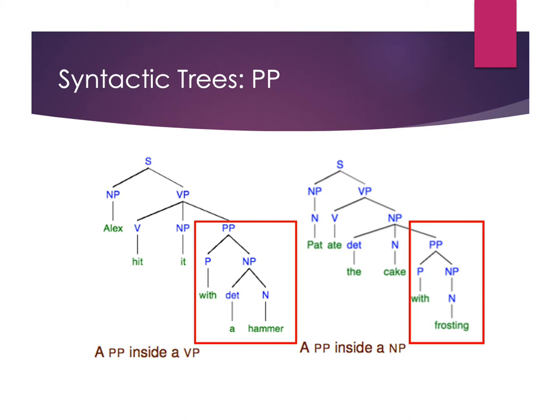In 'Pat ate the cake with frosting,' the prepositional phrase 'with frosting' isn't telling us about the verb. So rather than attaching it up to the verb phrase, we bring it down and attach it inside the noun phrase, because it's telling us something about the cake — about that noun itself. So it's embedded within the noun phrase because of the information it's conveying. We have our determiner, our noun, and then the prepositional phrase inside the noun phrase.